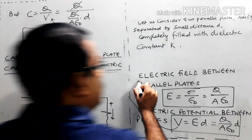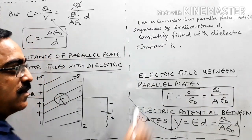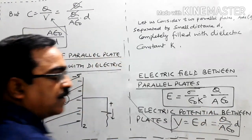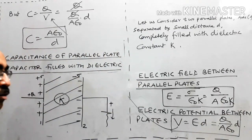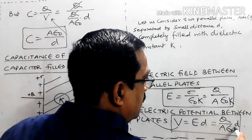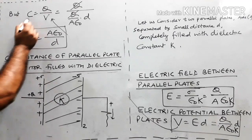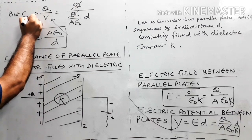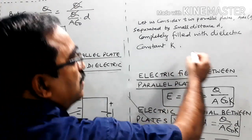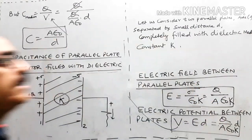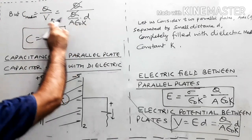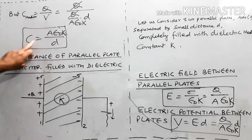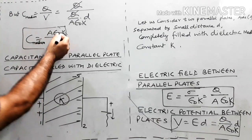Electric field between parallel plates with dielectric: E = σ/(ε₀K). Electric potential between plates: V = ED with K, so V = QD/(AKε₀). Then C_medium = Q/V = AKε₀/D.